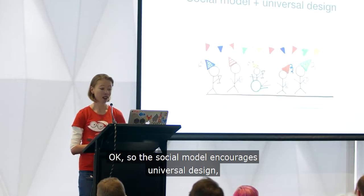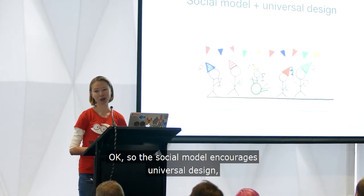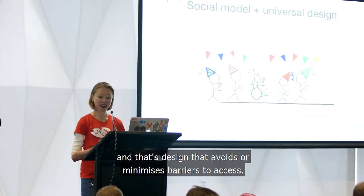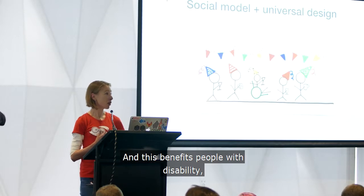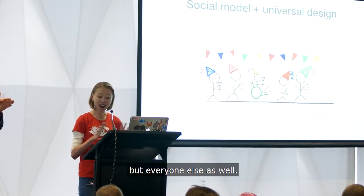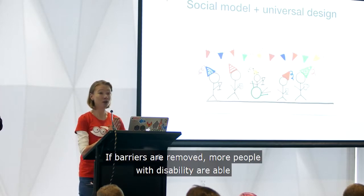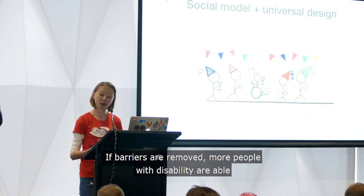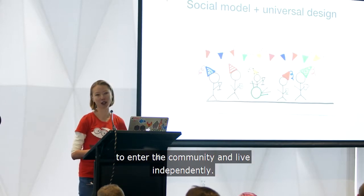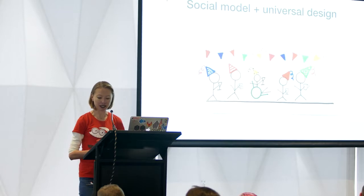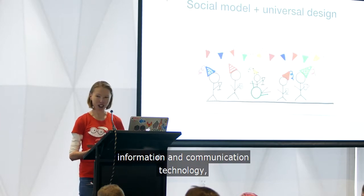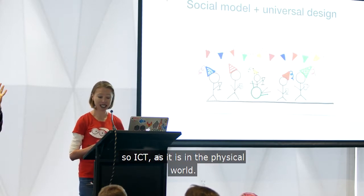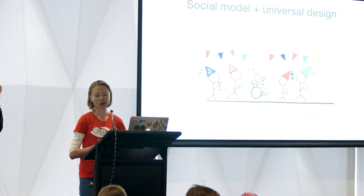The social model encourages universal design — that's design that avoids or minimises barriers to access. And this benefits people with disability, but everyone else as well. If barriers are removed, more people with disability are able to enter the community and live independently. And universal design is just as applicable for information and communication technologies (ICT) as it is in the physical world.